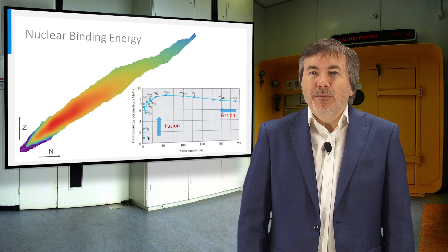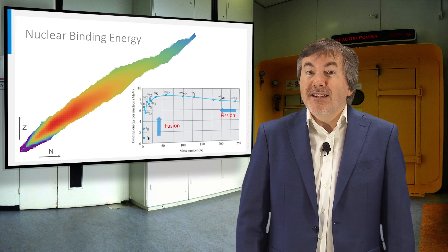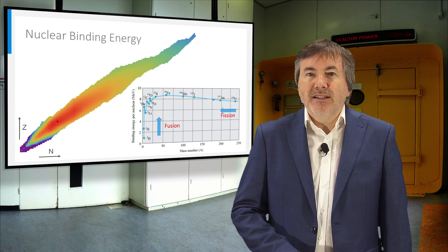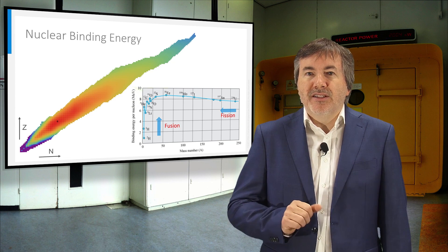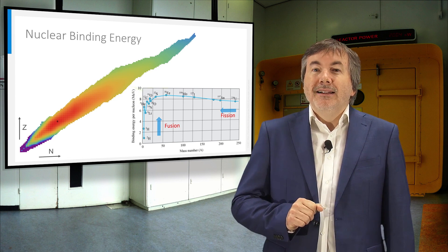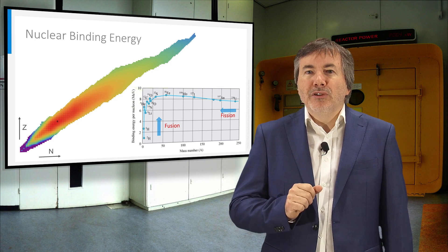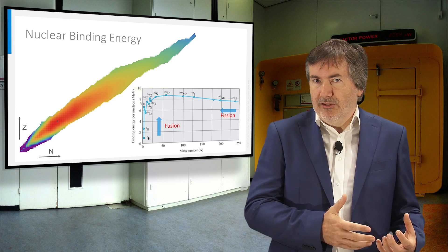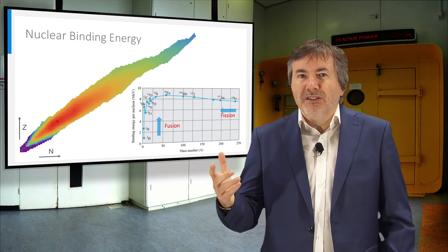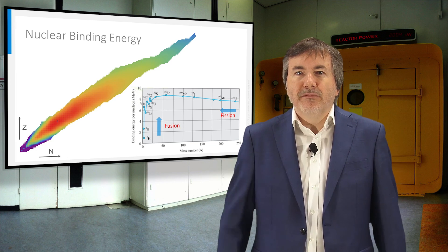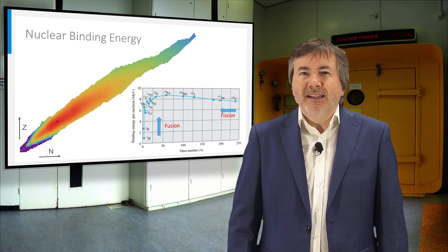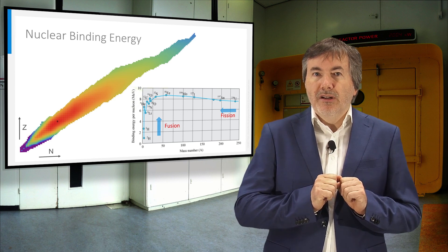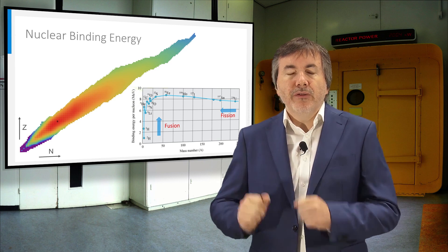The binding energy per nucleon is not the same in each nuclide. The most tightly bound nuclides have an intermediate size, like iron. The least tightly bound nuclides are light elements like hydrogen, and the very heavy ones like uranium. That means that binding energy can be gained through fusion of hydrogen or fission of uranium.